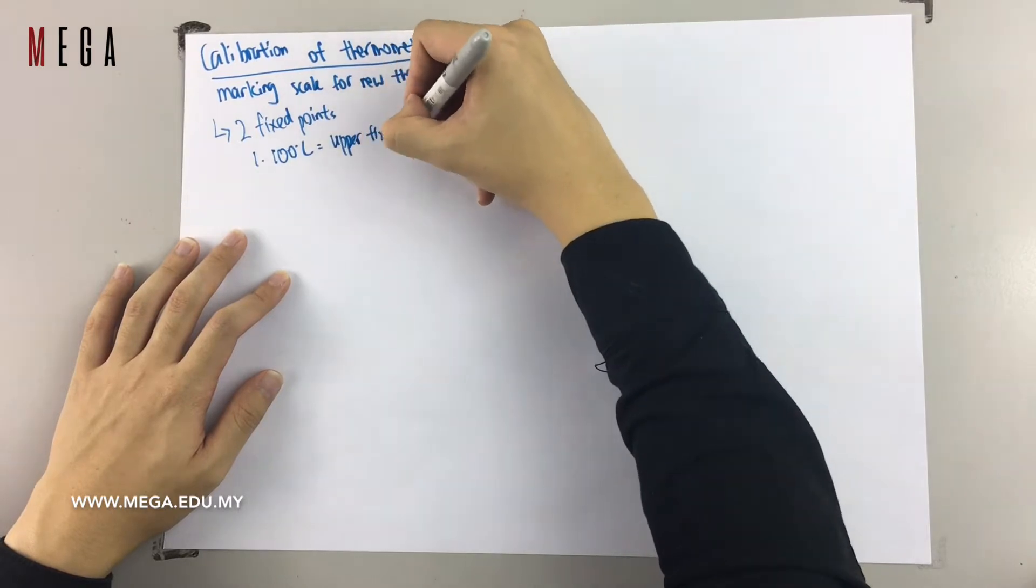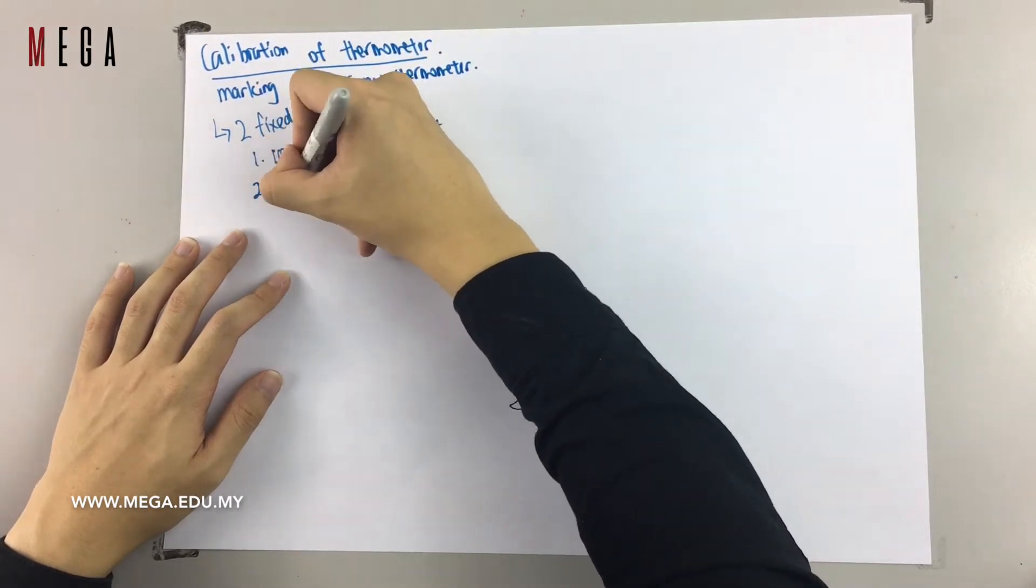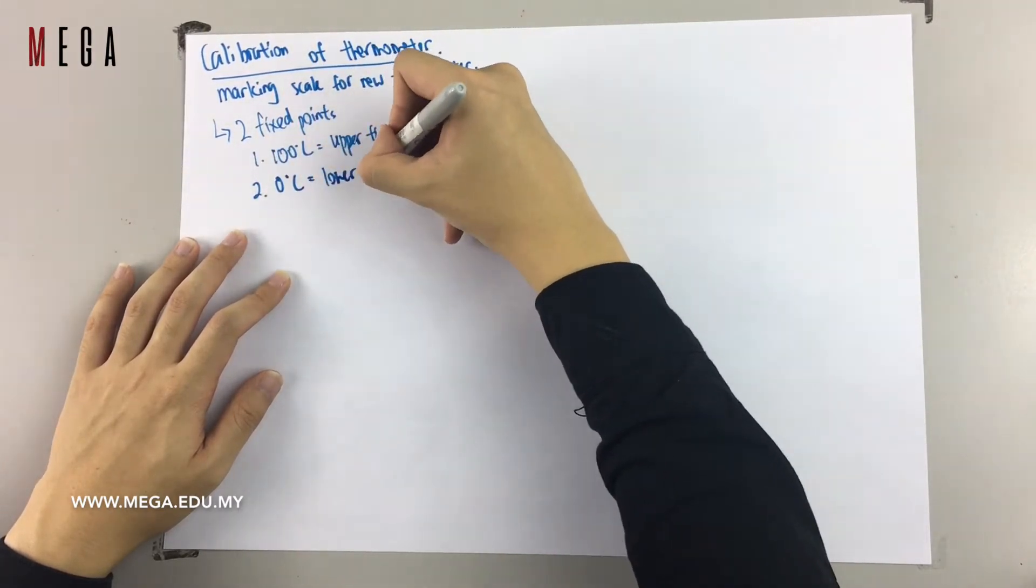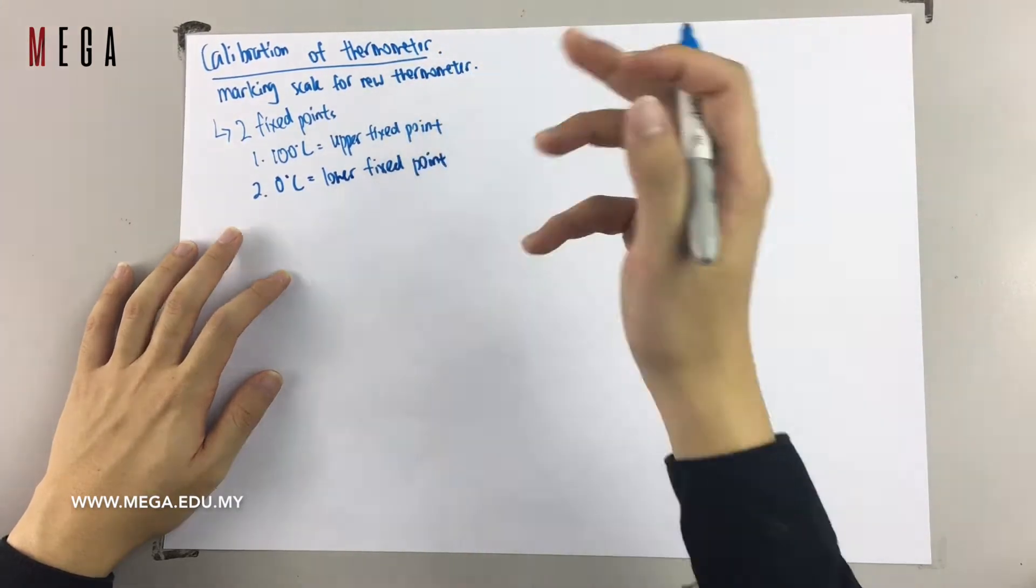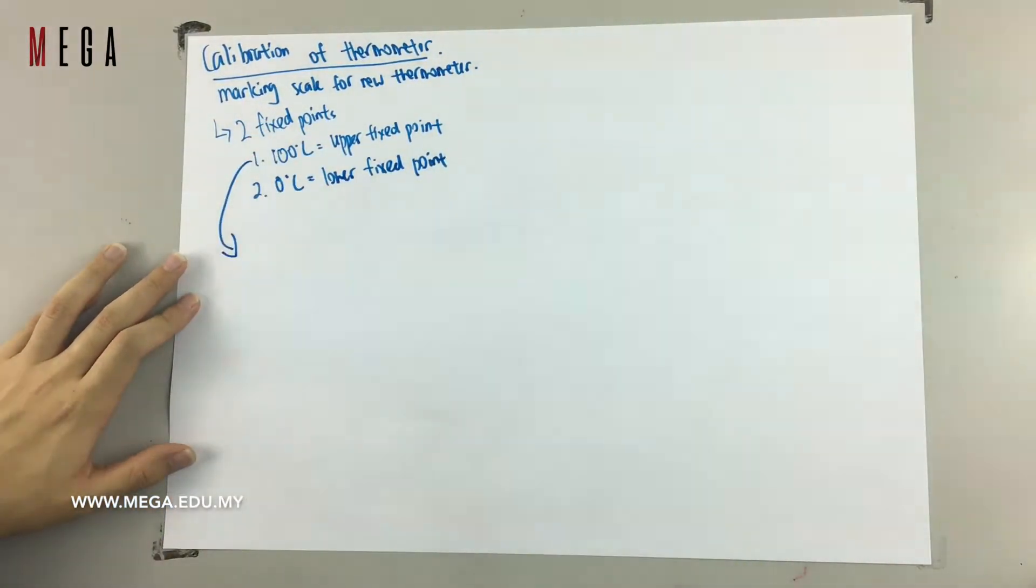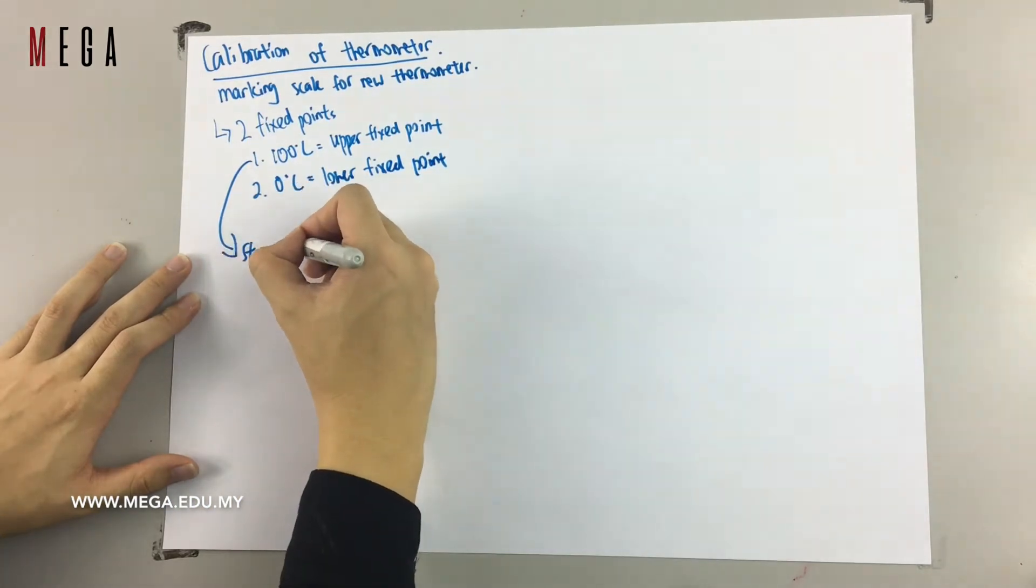So what are the fixed points? They are your ice point and steam point, or we call them upper and lower fixed point. The upper fixed point or steam point will be 100 degrees Celsius, lower fixed point will be 0 degrees Celsius.